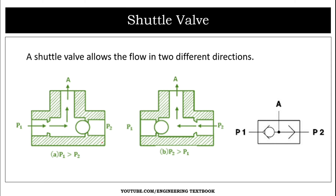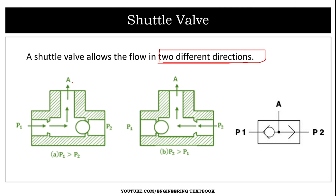Now we come to the shuttle valve. The shuttle valve allows the flow in two different directions. Here is the construction and symbol of the shuttle valve. There is inlet port P1, inlet port P2, and outlet port A — two inlet ports and one outlet port.